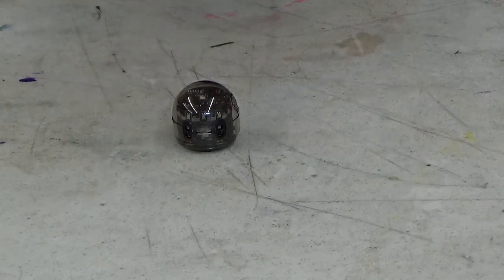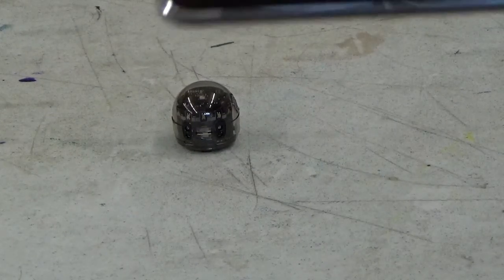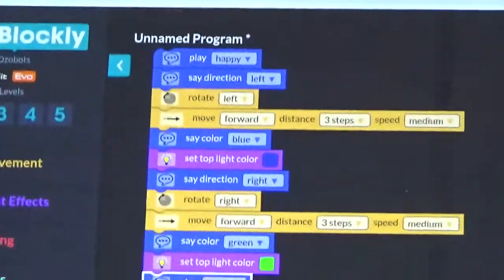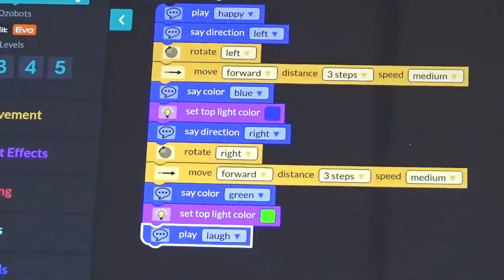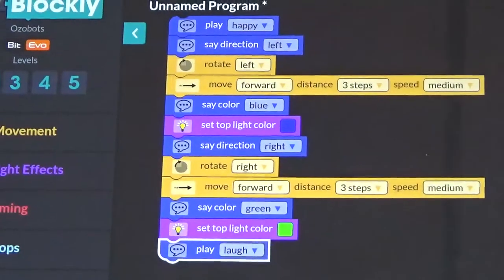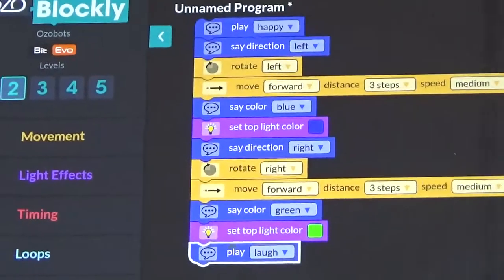So, I have part of the program already. I didn't finish the program. But as you can see, I'm going to have him do a happy sound. Then I'm going to have him say left. Then he'll turn left and move forward a little bit. Then he's going to say the color blue and then light up his top light blue.